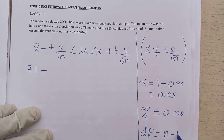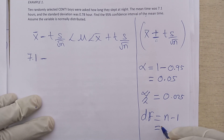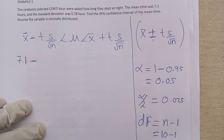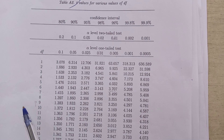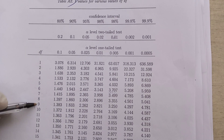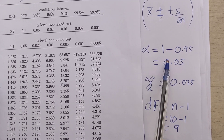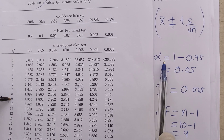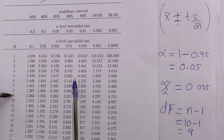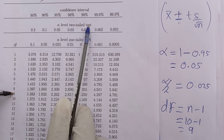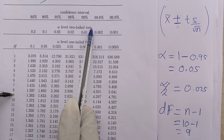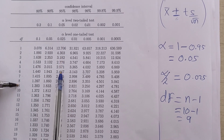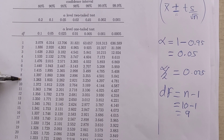Next, find the degree of freedom: n minus 1, which is 10 minus 1, giving 9. To look it up on the t-table, find the row for degree of freedom 9. If you want to use alpha (0.05) without dividing by 2, go to where they have written 'two-tailed test 0.05' and check accordingly. You get 2.262.